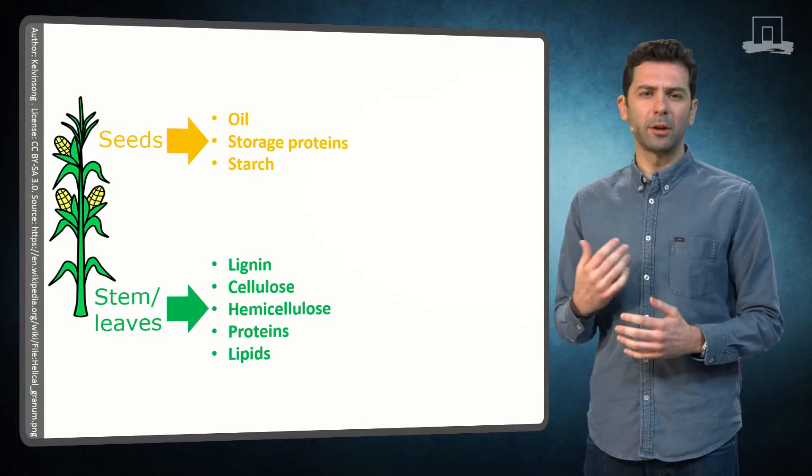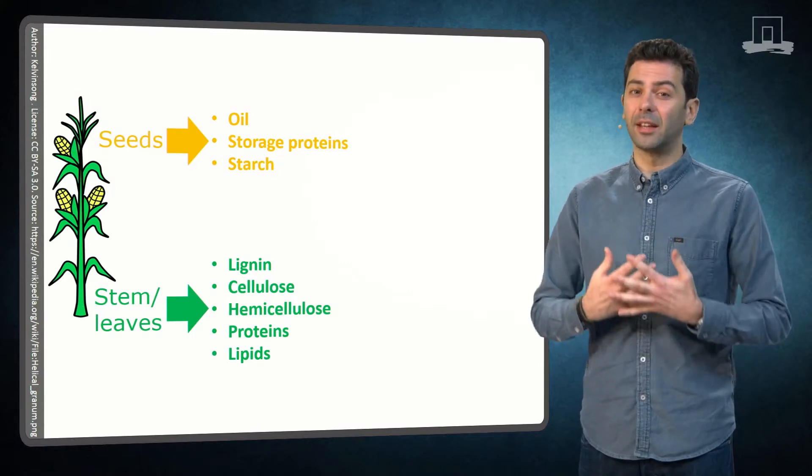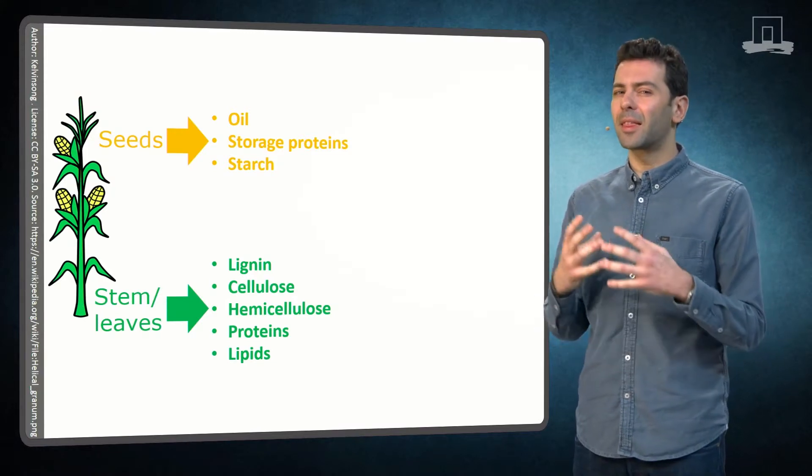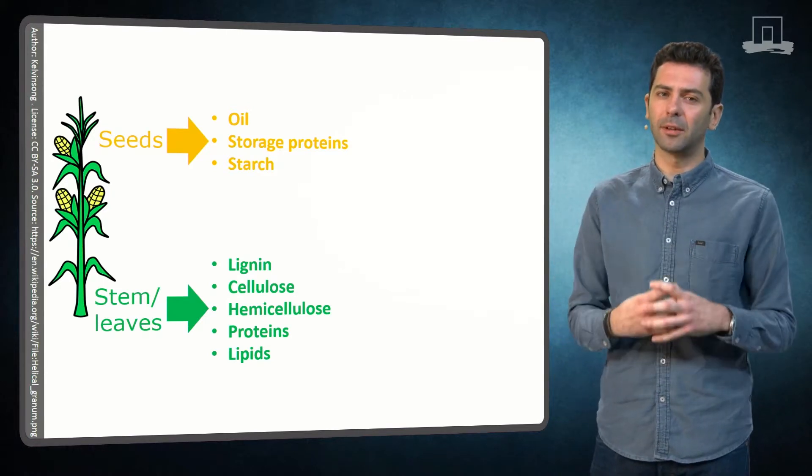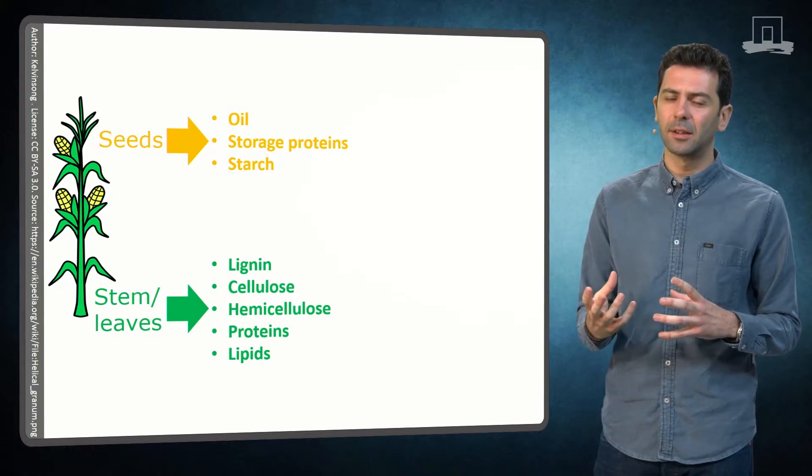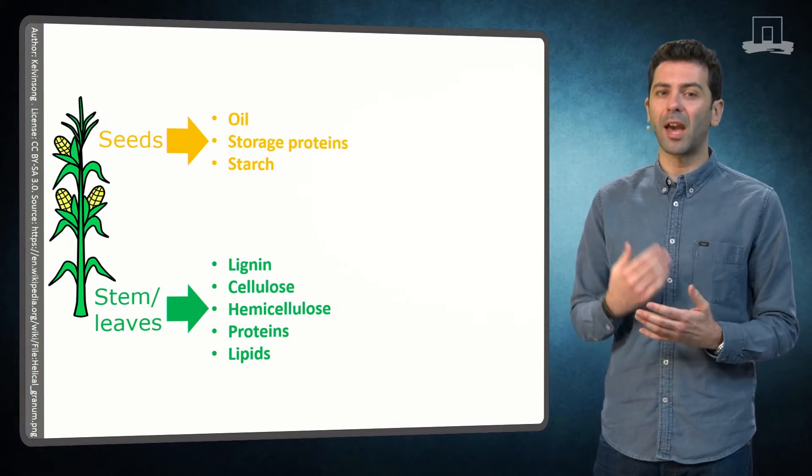When building a biorefinery, we should firstly know which compounds are present at each source. Then we should understand how these compounds are interconnected together and finally know which scale of purification is necessary for every compound.